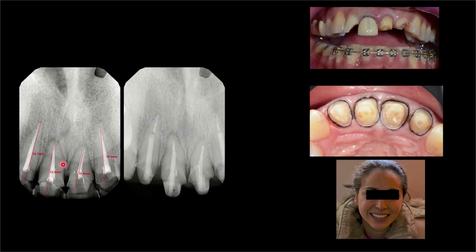Al analizar, podemos ver que sus raíces afortunadamente no sufrieron daño, tenemos suficiente longitud para hacer los tratamientos. Sin embargo, en el otro central había un poste colado demasiado corto y con una dirección que no seguía el conducto. Ahora eso para nosotros es un problema: si quiero aprovechar esta raíz, tengo que ver qué hacemos para solucionar este problema que ya estamos heredando.